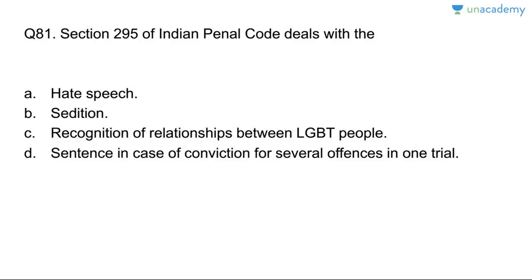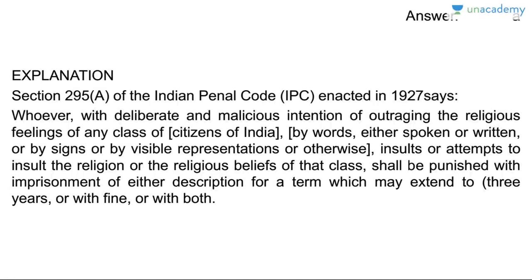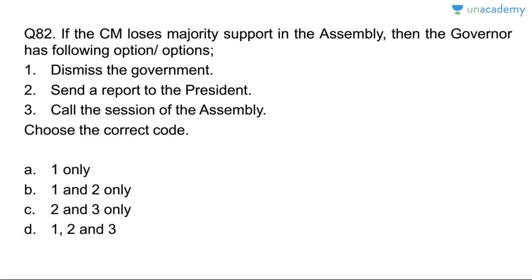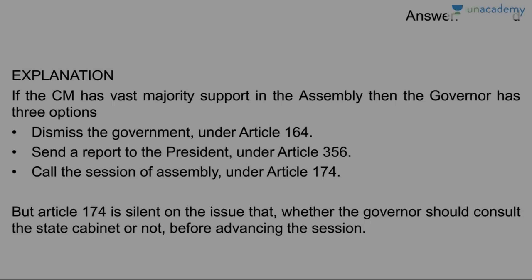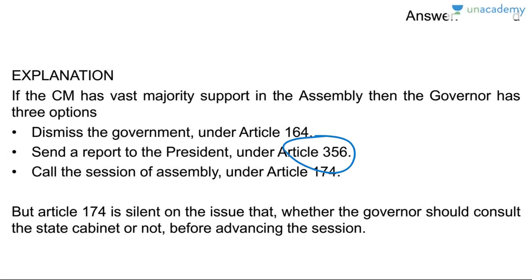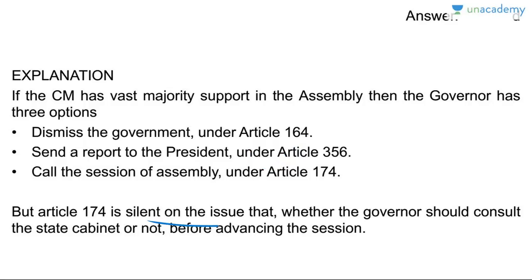Question eighty-two: if the Chief Minister loses majority support in the assembly, the Governor has the following options: dismiss the government under Article 164, send a report to the President under Article 356, or call the session of the assembly under Article 174. All three options are available to the Governor. However, Article 174 is silent on whether the Governor should consult the state cabinet before advancing the session.